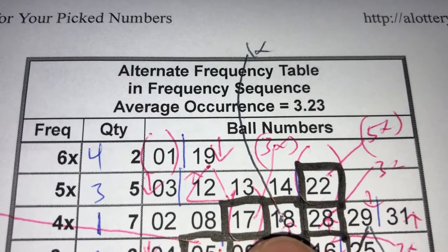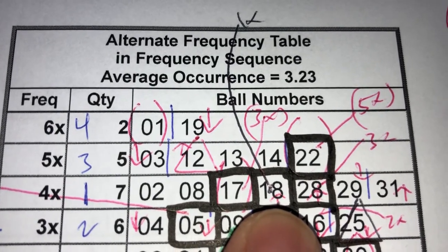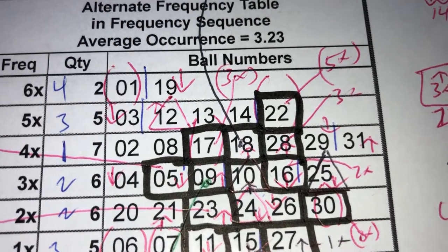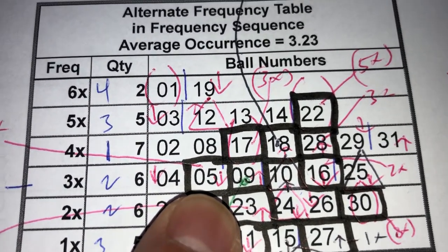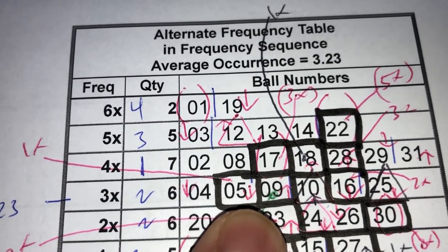Let's look at squares with arrows pointing down. Let's look at number five, for example. Number five has not been hit and it has an arrow pointing down with 1x.